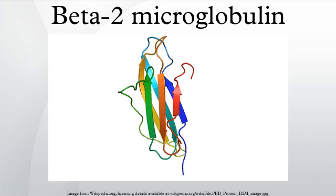Beta-2-microglobulin associates not only with the alpha chain of MHC class I molecules, but also with class I-like molecules such as CD1 and QA. An additional function is association with the HFE protein, together regulating the expression of hepcidin in the liver, which targets the iron transporter ferroportin on the cytoplasmic membrane of enterocytes and macrophages for degradation, resulting in decreased iron uptake from food and iron release from recycled red blood cells, respectively.